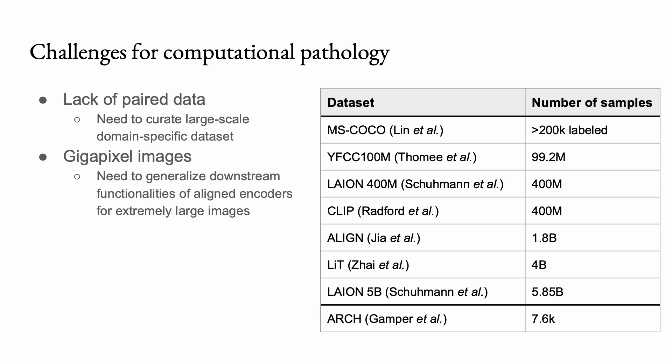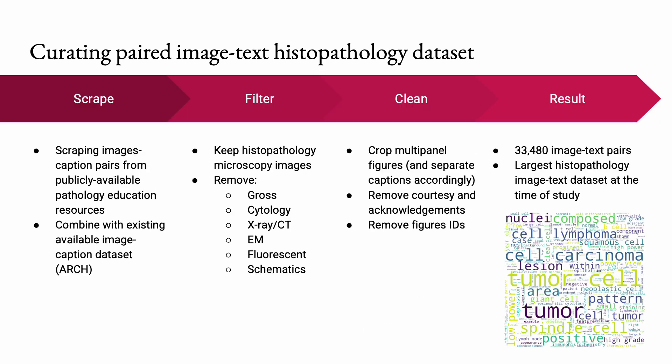In this work, we will tackle both challenges. To overcome the lack of data, we collect data by web scraping image-caption pairs from publicly available educational resources in the pathology domain and combine them with the existing image-caption dataset. After filtering for only microscopy images and cleaning multi-panel figures and erroneous captions, we yield a diverse dataset of 33,000 image-text pairs, covering all major biopsy sites and morphologies of both diseased and normal tissue. Our dataset is the largest of its kind in the pathology domain at the time of this study.